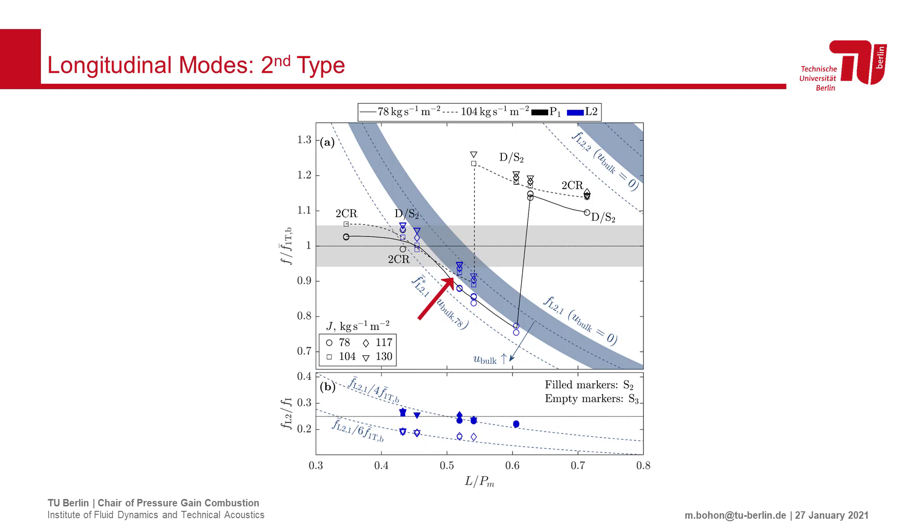As the length of the combustor is further increased, the operating frequency follows the L2 mode until the entrainment is no longer sufficient and the rotating components can again dominate.